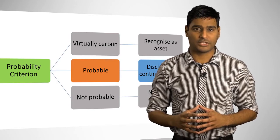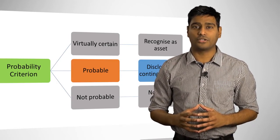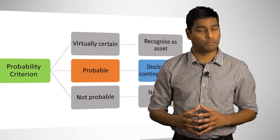To recap, contingent assets are possible obligations that only require disclosure when the flow of economic benefits are probable.